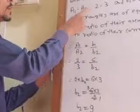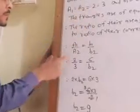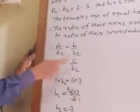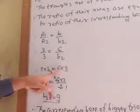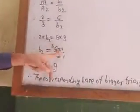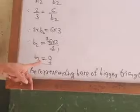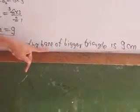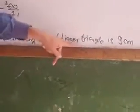A1 upon A2 is given as 2 upon 3, and B1 is given as 6, so 2 upon 3 equals 6 upon B2. Cross multiplication: 2 into B2 equals 6 into 3. So B2 equals 18 divided by 2, which gives B2 equal to 9. Therefore the corresponding base of the bigger triangle is 9 cm.